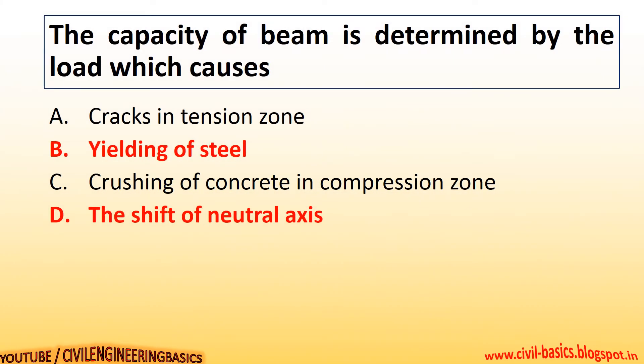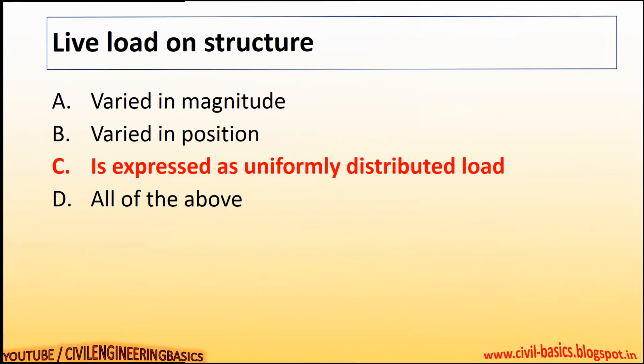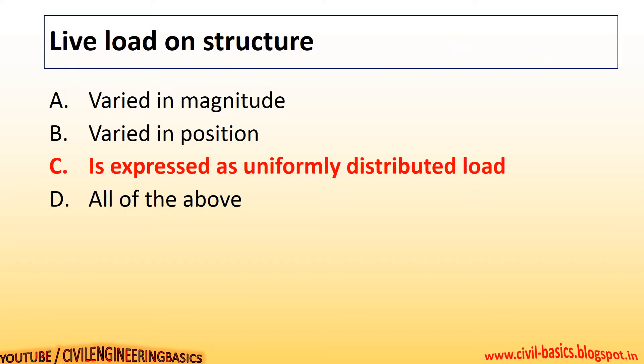The capacity of a beam is determined by the load which causes yielding of steel and the shift of the neutral axis. Live load on a structure is expressed as a uniformly distributed load.